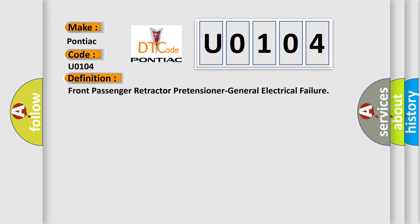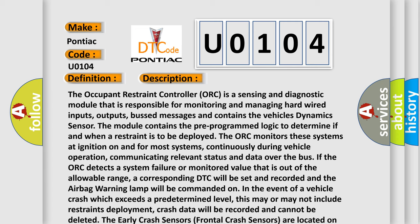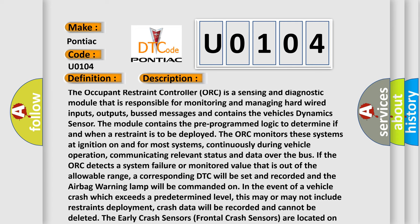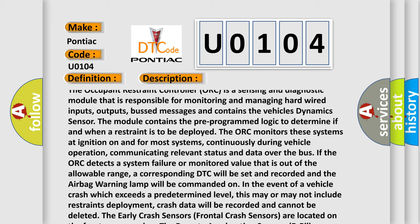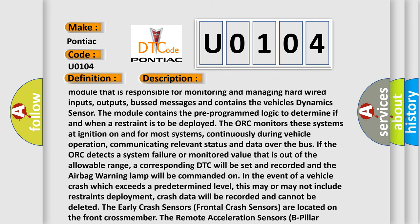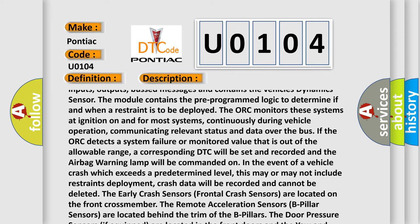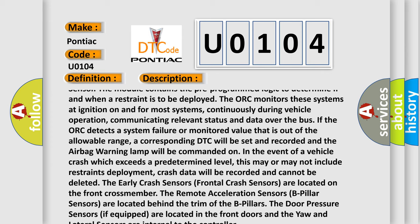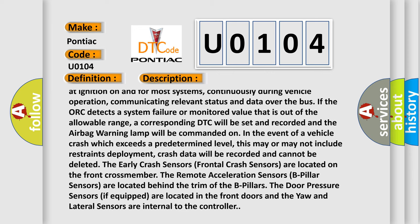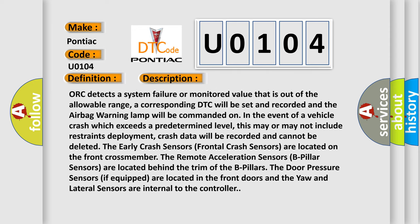The basic definition is: Front passenger retractor pretensioner general electrical failure. The occupant restraint controller AUK is a sensing and diagnostic module responsible for monitoring and managing hard-wired inputs, outputs, bus messages, and contains the vehicle's dynamic sensor. The module contains pre-programmed logic to determine if and when a restraint is to be deployed. The AUK monitors these systems at ignition on and, for most systems, continuously during vehicle operation, communicating relevant status and data over the bus. If the AUK detects a system failure or a monitored value that is out of the allowable range, a corresponding DTC will be set and recorded, and the airbag warning lamp will be commanded on.